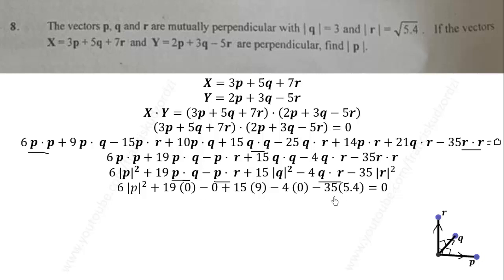When we simplify, we obtain 6P squared. Now, magnitude of Q is given as 3, so when you square both sides you get 9, substitute 9 here. Magnitude of R equals square root of 5.4, so squaring it will give us 5.4, substituted here. We evaluate this and get 6P squared minus 54 equals 0. Dividing by 6 gives us magnitude of P squared equals 9. Hence, the magnitude of P is 3.